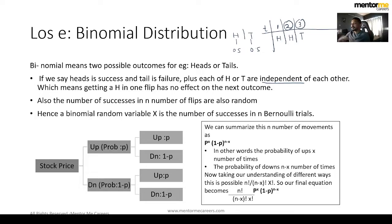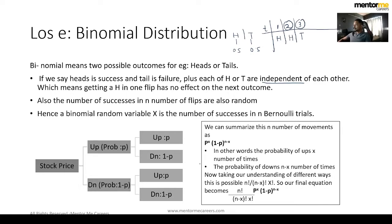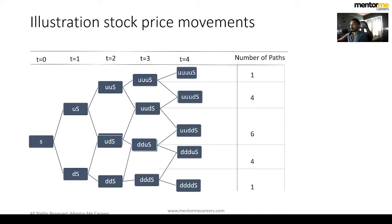Binomial distribution is especially used in options pricing, which you'll learn in CFA Level 2. But let's try to understand this logically first, so you understand how to use the formulas, because these formulas can look pretty intimidating. There's no point trying to use the formula unless you understand how it works.